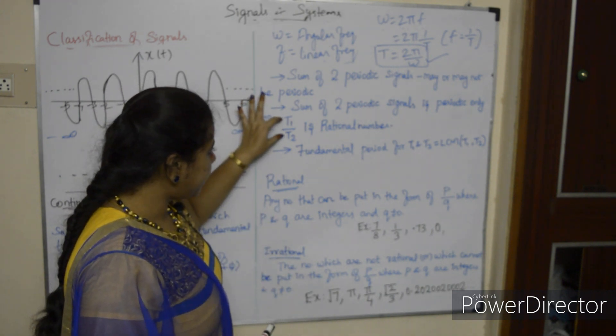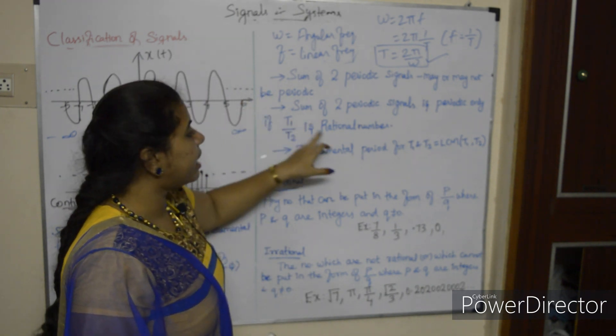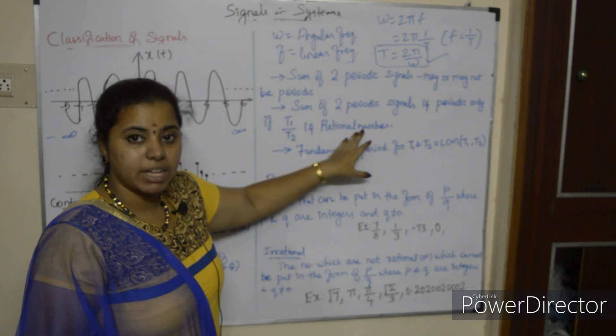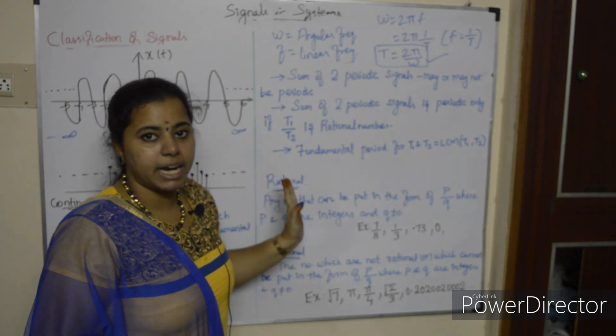If T1/T2 is a rational number, then the sum of the two periodic signals is periodic.